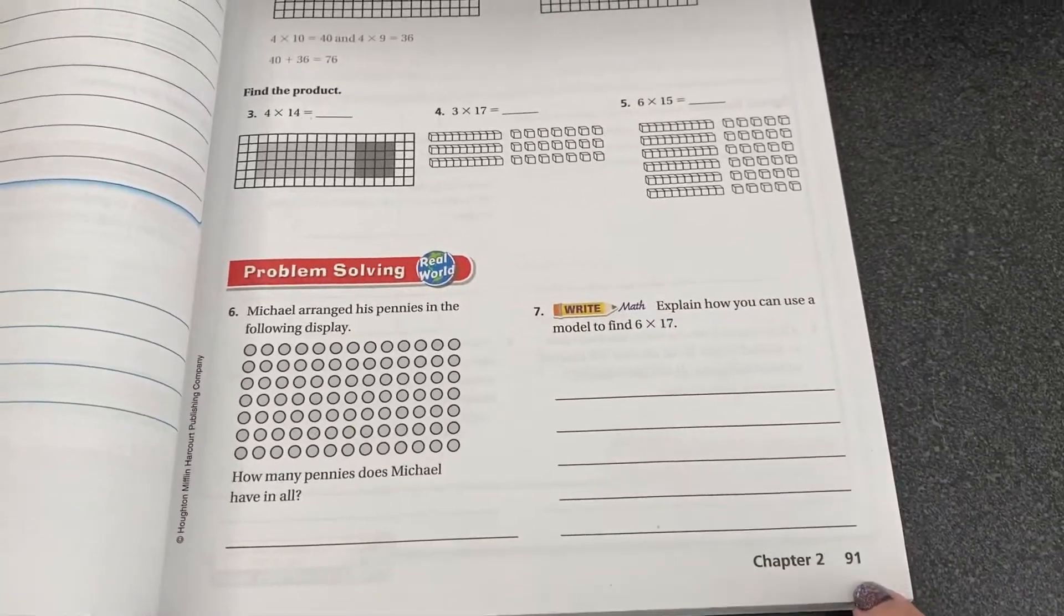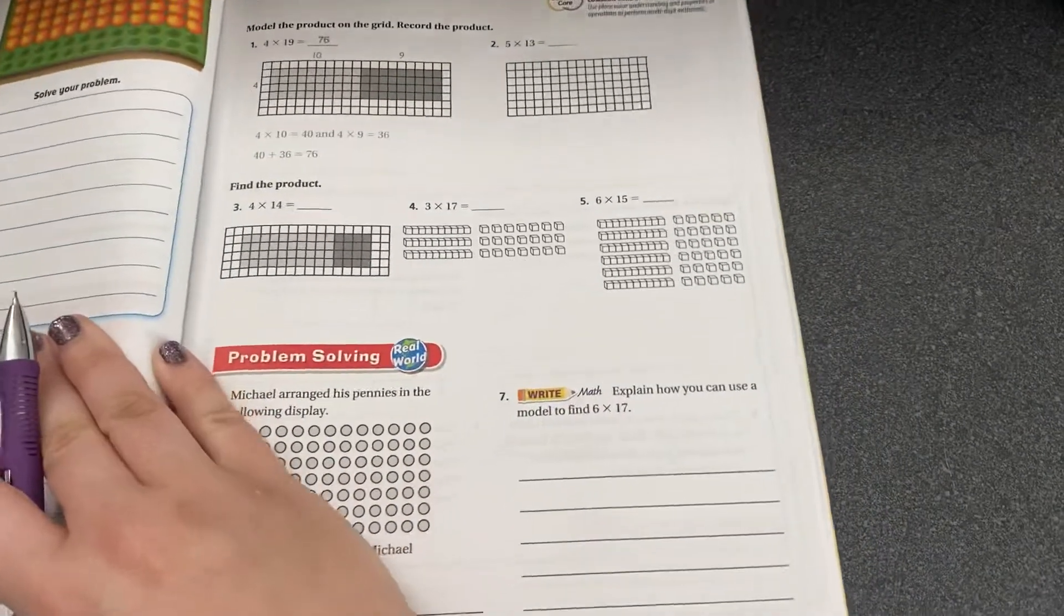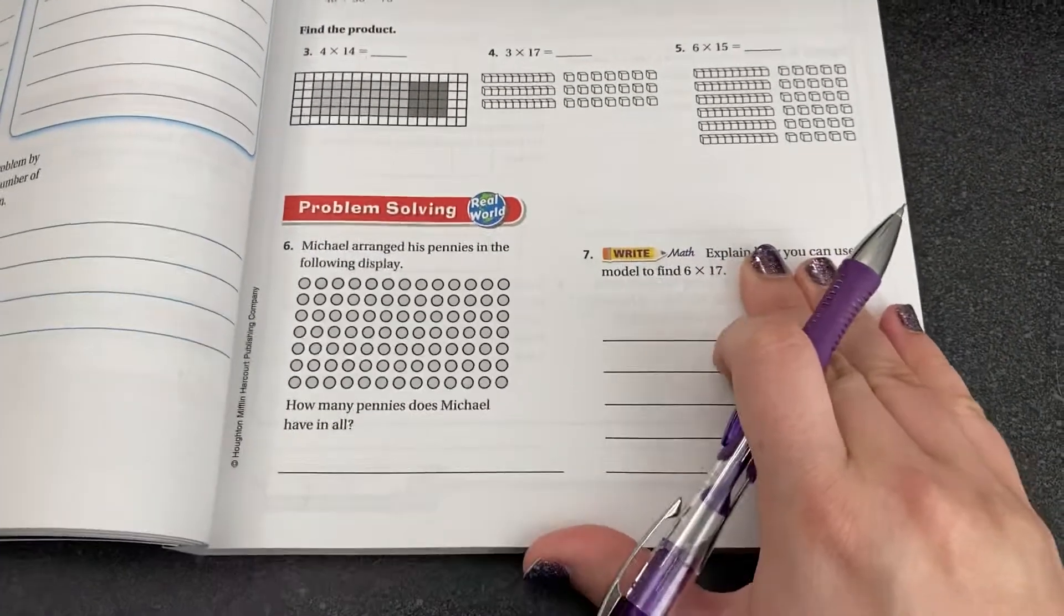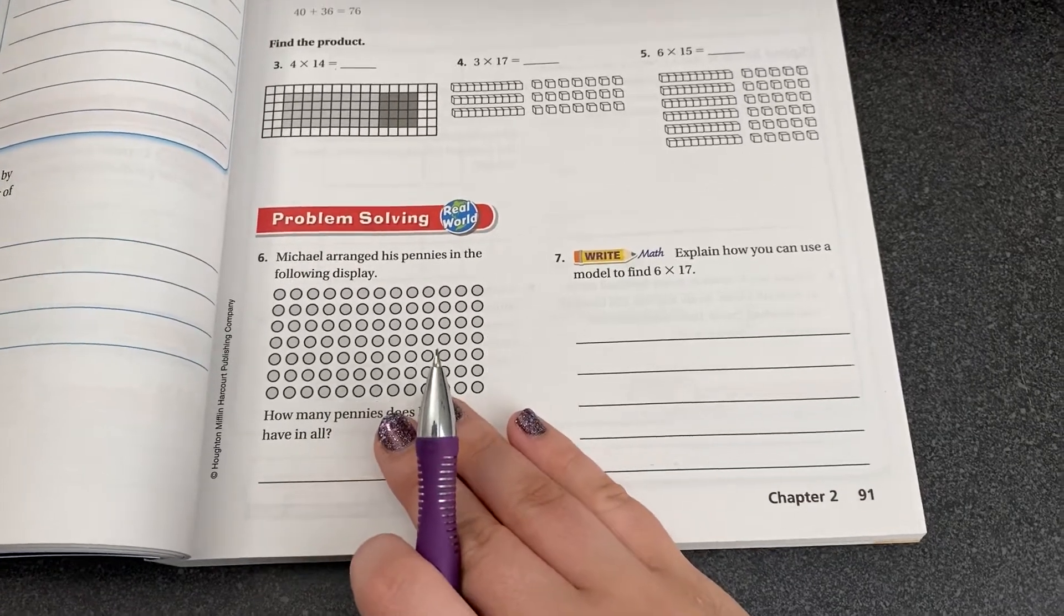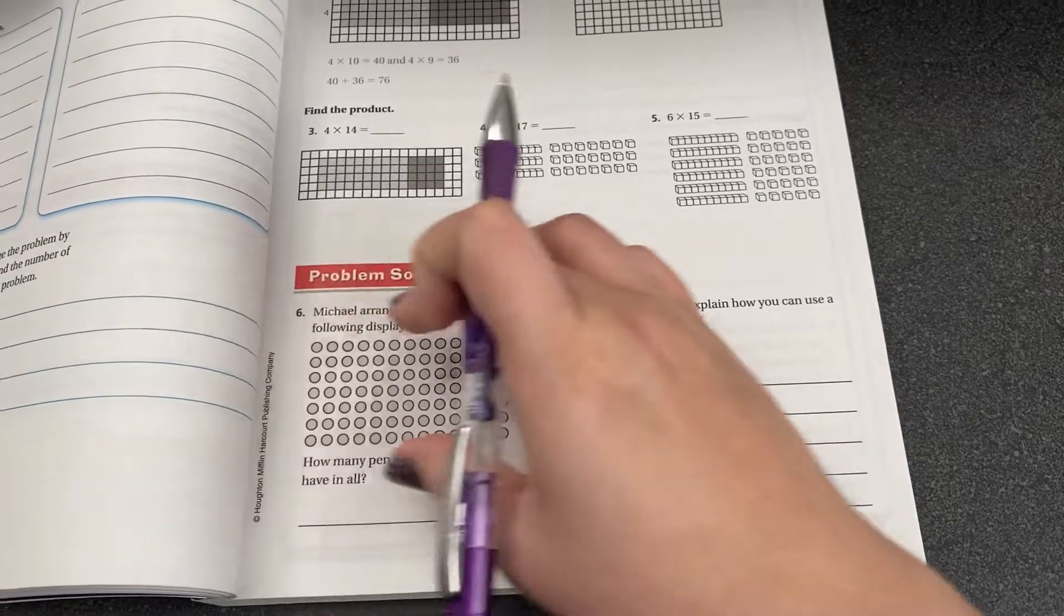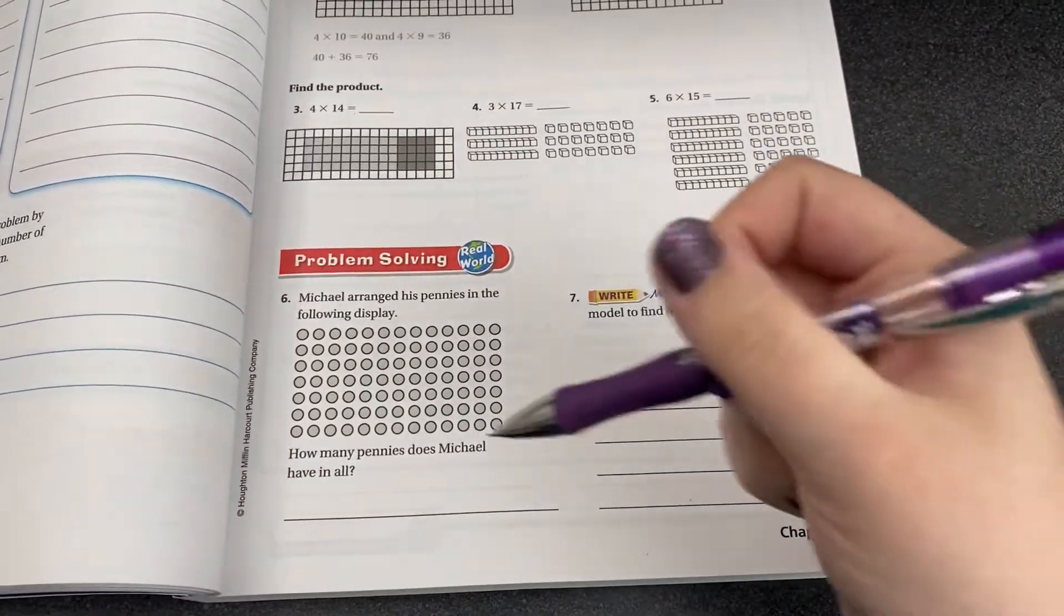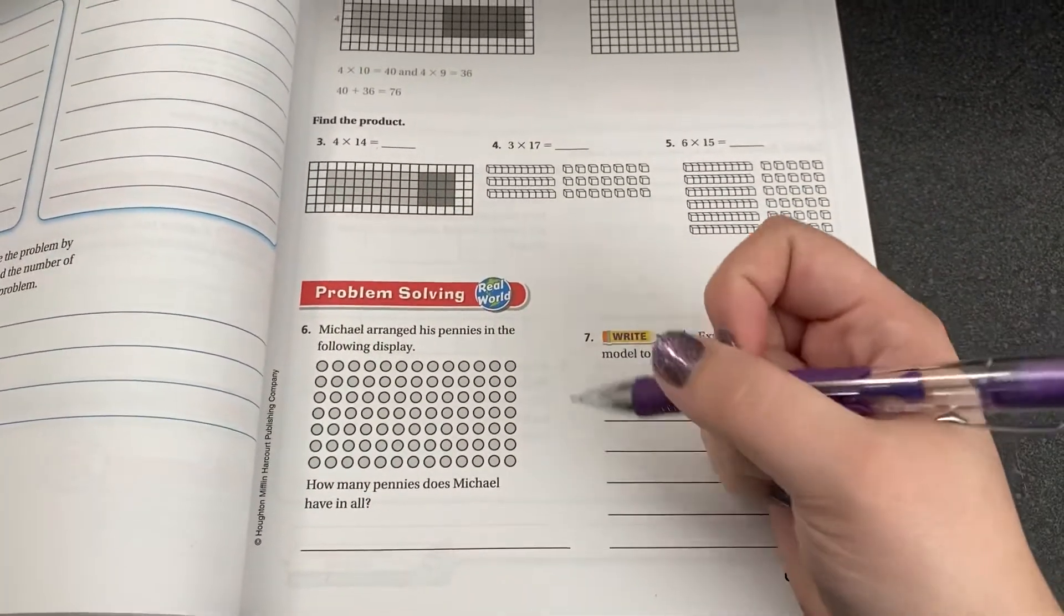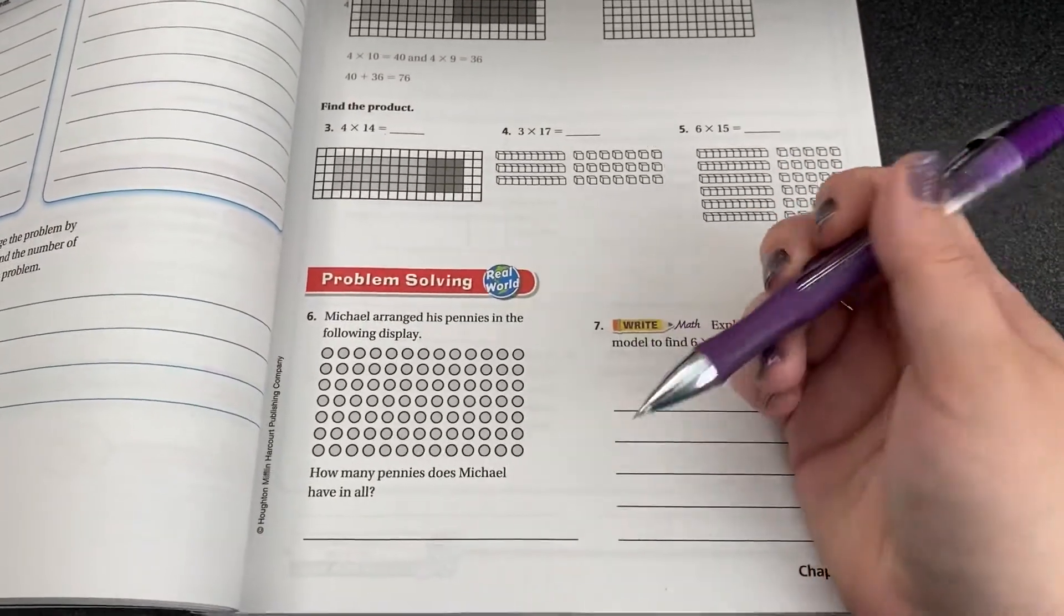So I'm on page 91. You can do these along with me so you can get a feel for what's coming. I'm actually gonna start with number six. Last year you learned how to multiply using arrays. Remember an array is just an organized group of counters or pictures organized into rows and columns of even groups.